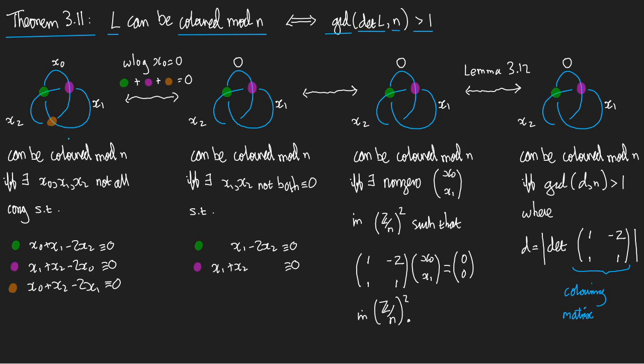So let's start. Can I colour the trefoil mod n? Well, how do I tell? Well, I label my arcs. I'm going to use x0, x1, x2. And I label my crossings.